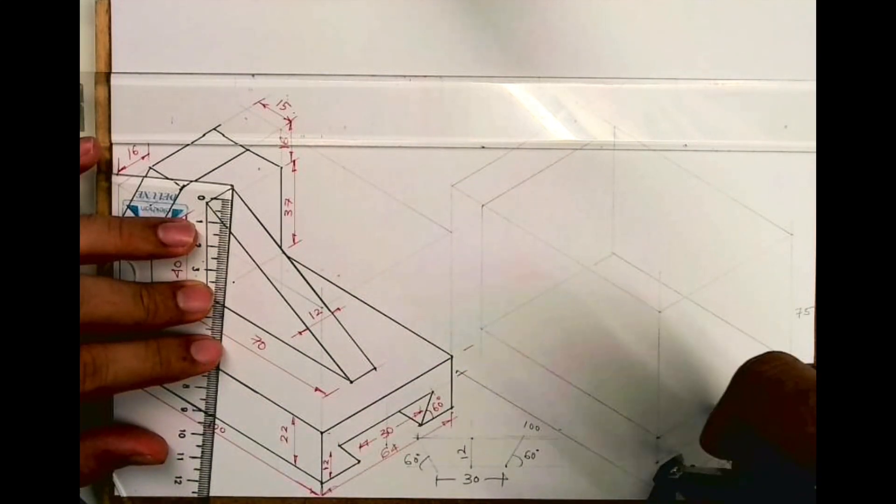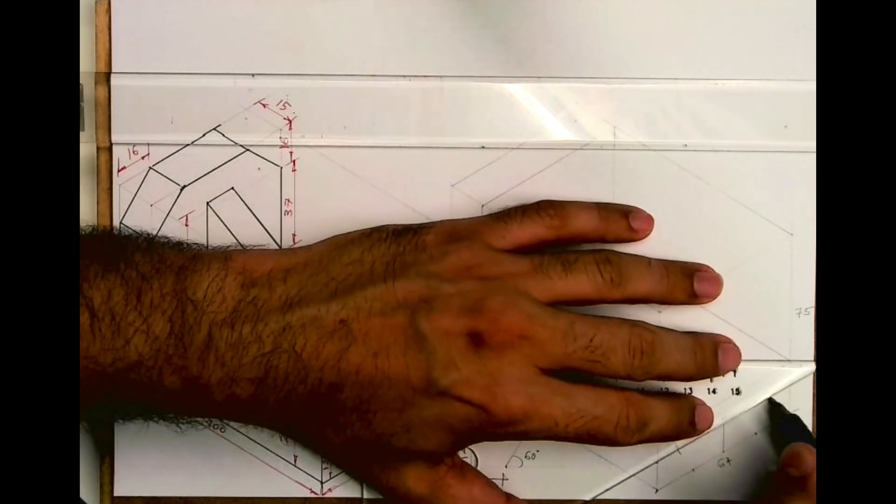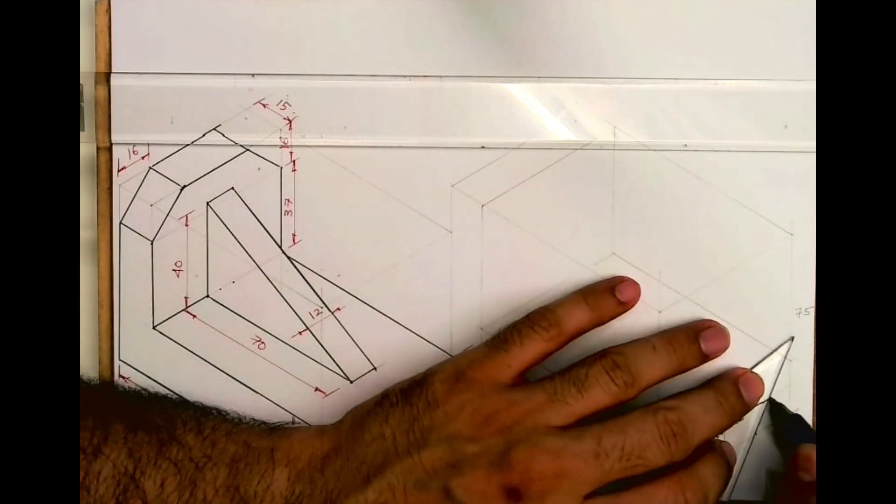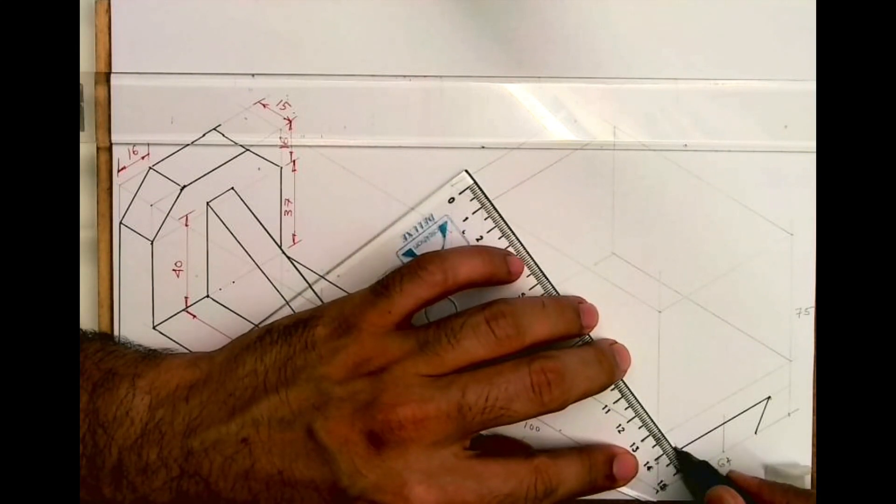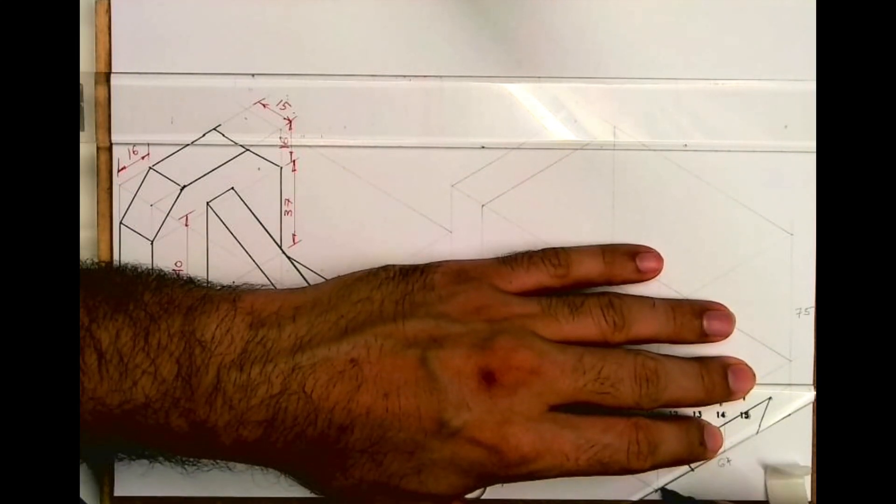As well as here, it will be the same on both the sides. So you draw this and you join. So this is how you will get the dovetail slot.